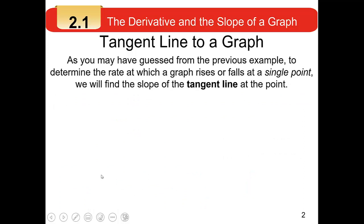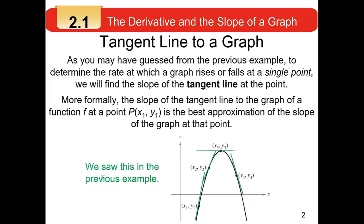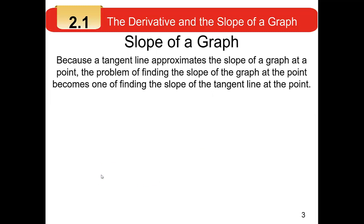You may have guessed already that to determine the rate at which a graph rises or falls at a single point, we use the slope of the tangent line at that point as a measure. More formally, the slope of the tangent line to the graph of a function f at a point P(x₁, y₁) is the best approximation of the slope of the graph at that point. So finding the slope of the graph at a point really comes down to just finding the slope of the tangent line at that point.